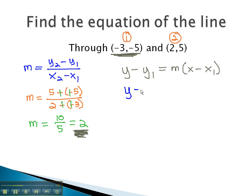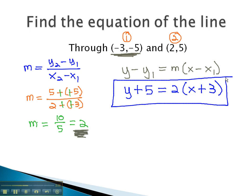Plugging in what we know, we have y minus y1, which is negative 5. Subtracting negative 5 is the same as adding 5, equals m, our slope, which we just found to be 2, times x minus x1, which from our given point is negative 3. Minus a negative 3 is like adding 3, and that will give us the equation of a line that goes through the two points.